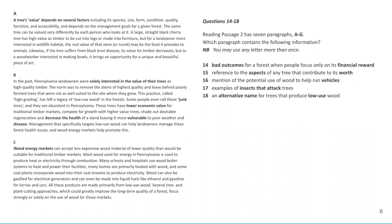Question 16 says 'mention of the potential use of wood to help run vehicles.' Paragraph C was all about burning low quality wood for energy. Looking more closely, it says liquid fuels like ethanol and gasoline for lorries and cars — lorries and cars are the vehicles. Question 18 asks for an alternative name for trees that produce low use wood. Whenever you see a question looking for a name or term, look for inverted commas. We had 'junk trees' in inverted commas in paragraph B, so that's very easy to find.